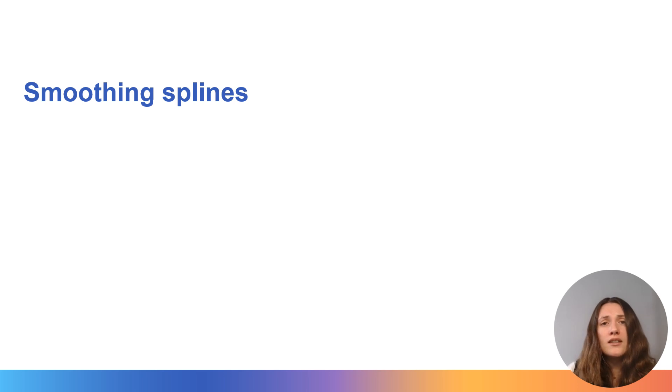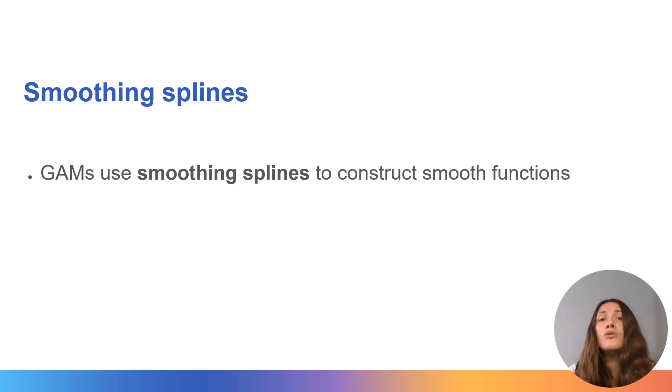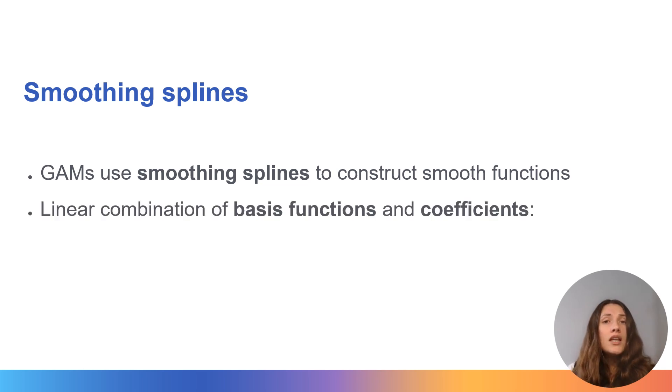To address these concerns, generalized additive models use smoothing splines to construct the smooth functions. These splines are actually broken down further into linear combinations of basis functions applied at intervals across our coefficient and some coefficients estimated from the data. So our smooth functions actually look like this with the basis functions b determined before the model fit and betas estimated from the data.